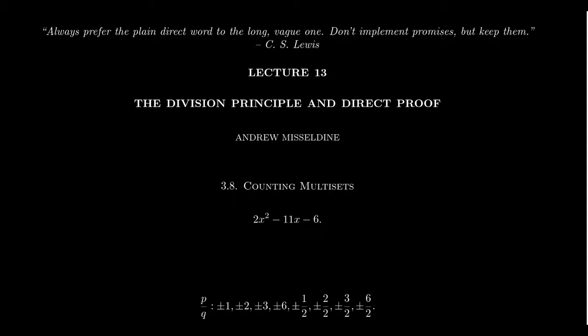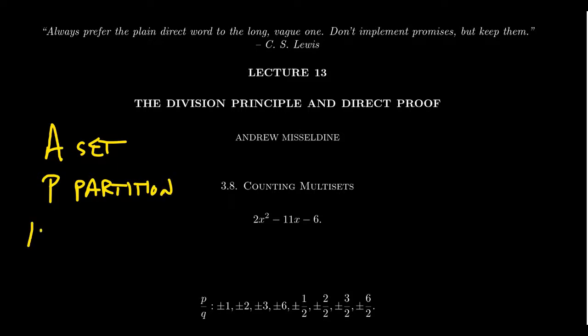In combinatorics, we often are faced with enumeration problems involving partitions. More specifically, given a set A and some partition P, we want to count the number of classes inside of the partition — that is, the cardinality of the partition itself. How many classes are there? The way we approach this is by looking at elements inside the set and using that to help us better understand the partition. If you look at a class, you could take an element in that class and they're probably connected by some relation — some notion of sameness. You might look at a typical element in a class and use that to try to count how many classes you have.